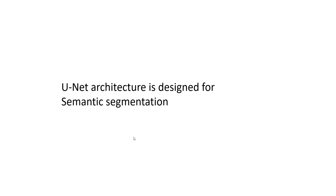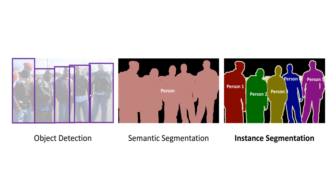U-Net architecture is designed for semantic segmentation. To explain: if you have an image with people in it and you draw bounding boxes around each individual, that is object detection. But if you actually paint the pixels corresponding to humans in the image, then that is semantic segmentation — where every pixel either represents a person or a non-person background. U-Net is designed to do exactly this task.